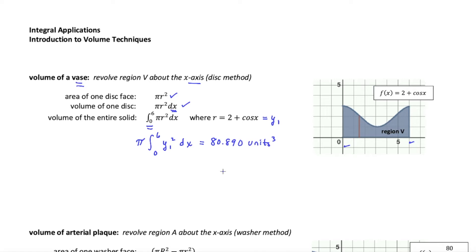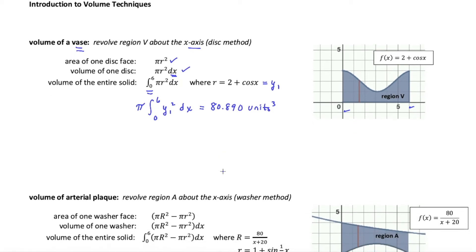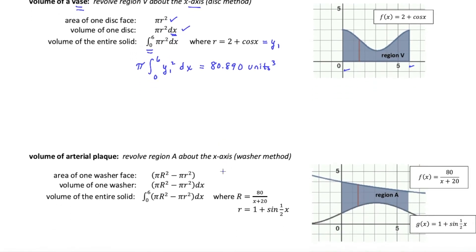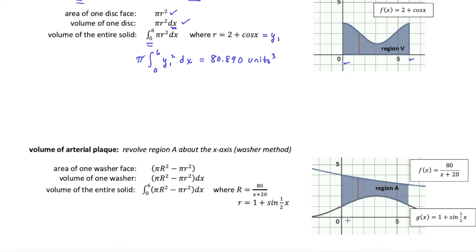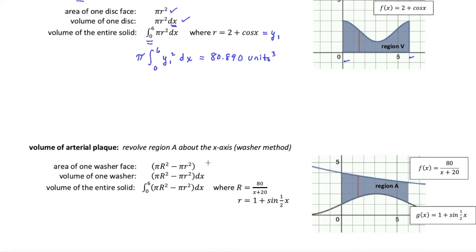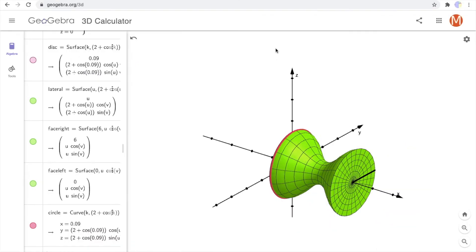Let's look at another example. Again we're revolving around the x-axis, but this time the region is not bumped up against the x-axis — there's some space, so it will have a hollow interior. What we're going to get is an image of an artery with some plaque inside it. I'll move over to the three-dimensional graphing to show you that picture.